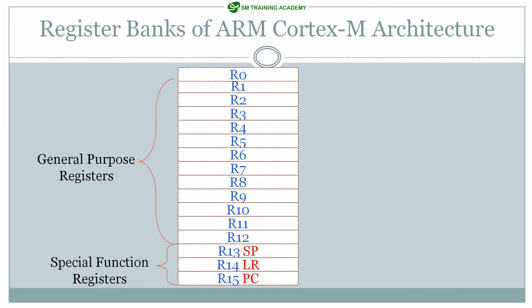As discussed in previous videos, the temporary registers available in ARM Cortex-M architecture start from R0 to R15 — a total of 16 registers. R0 to R12 are general purpose registers, most widely used for storing temporary data for ALU operations. R13, R14, and R15 are the stack pointer, link register, and program counter — these special function registers will be discussed in detail in future videos. For processing purposes, we use the general purpose registers R0 to R12.